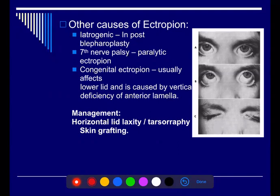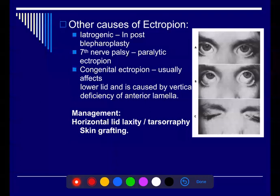Cicatricial ectropion can also occur following blepharoplasty — in iatrogenic cases, if we remove too much skin and muscle. Cicatricial ectropion affects the lower lid and is caused by vertical deficiency of the anterior lamella. Management includes horizontal lid laxity correction, canthopexy, or skin graft. For paralytic ectropion due to 7th nerve palsy, we treat the patients with botox, which is effective in reducing the condition. This concludes the presentation — the floor is open for any questions.